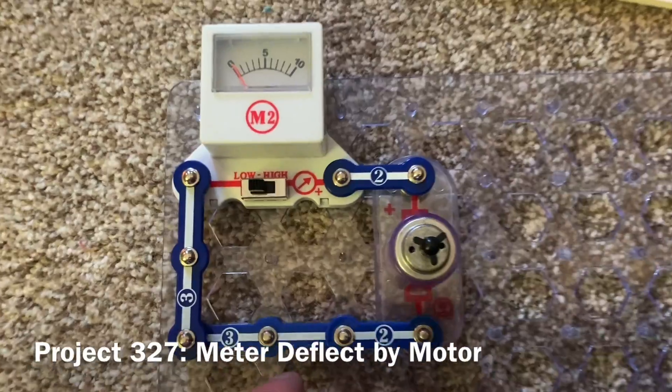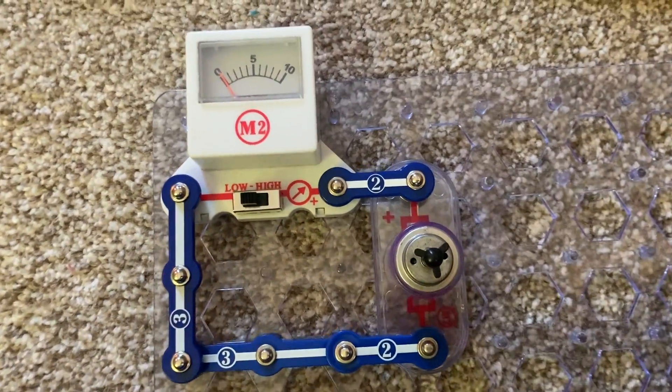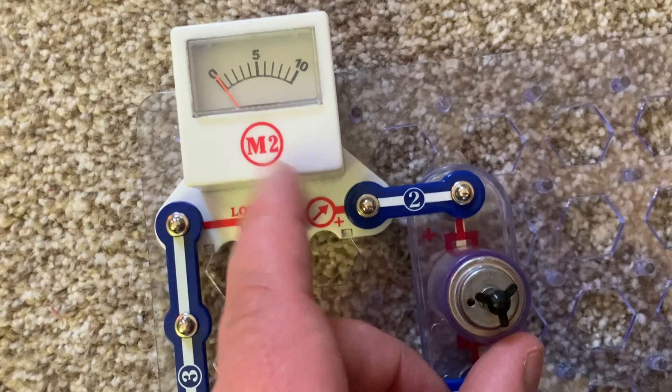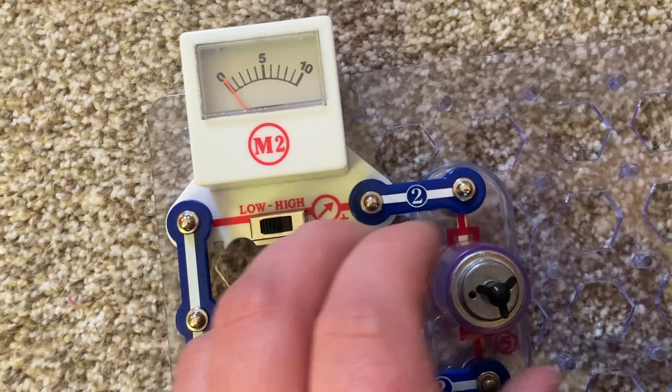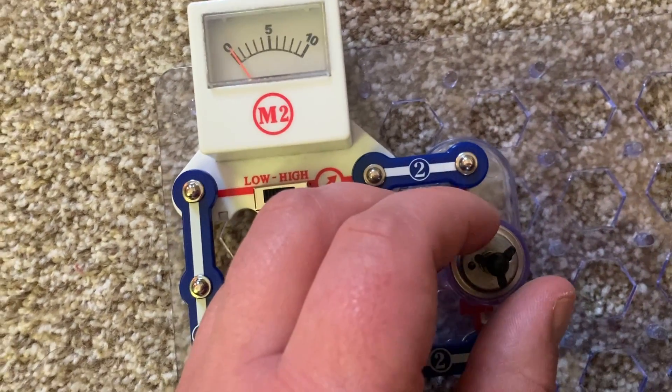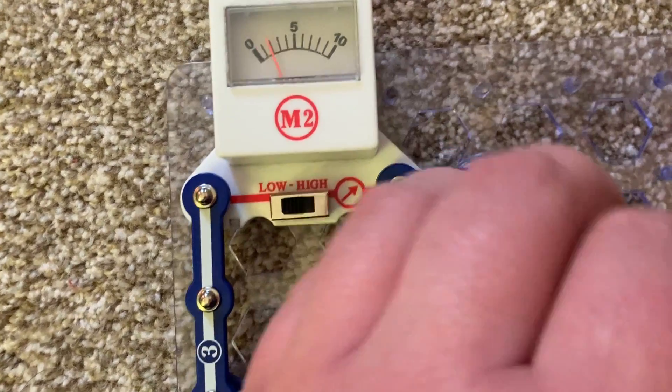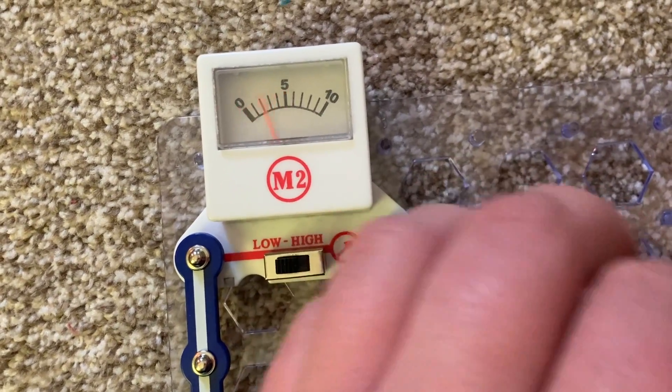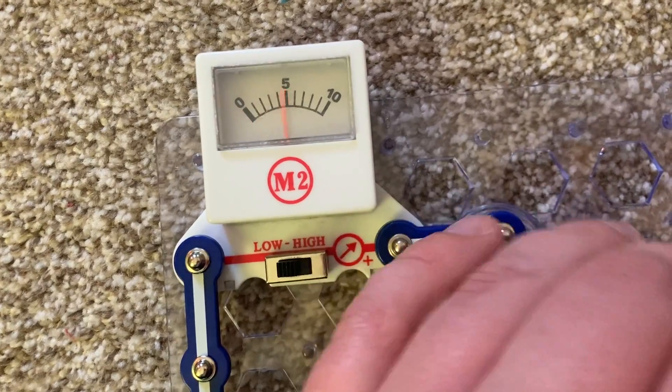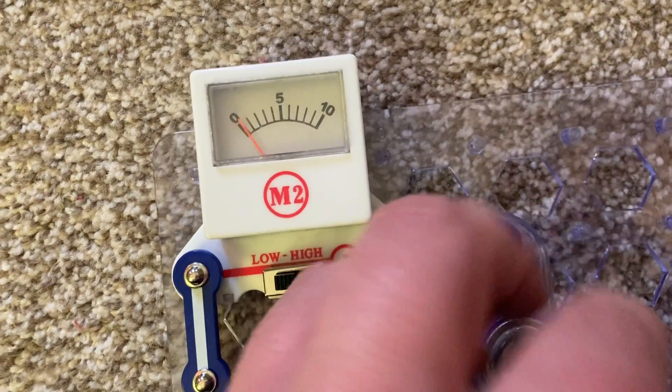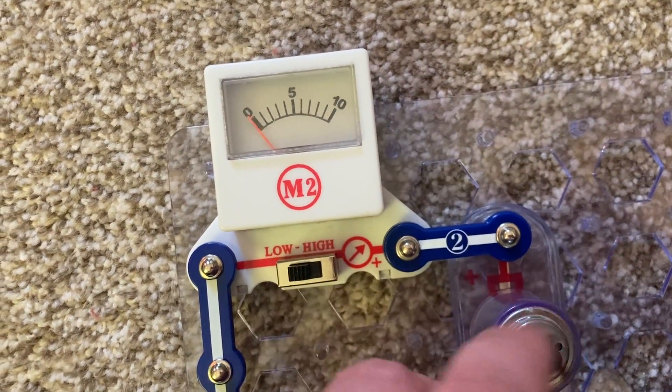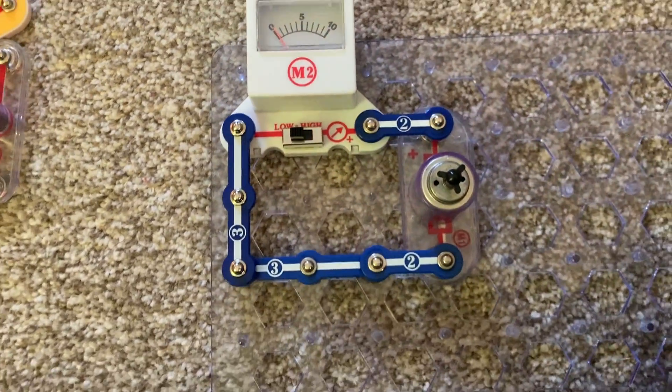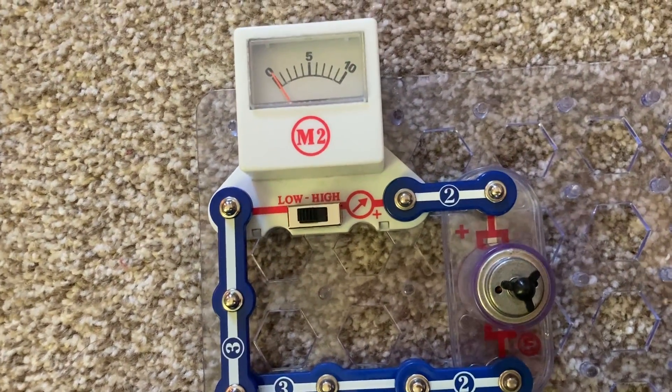You can produce current by spinning the motor. The meter is on the 10 milliamp setting. And when I turn the motor clockwise, the meter will deflect to the right. But when I turn it counterclockwise, it will deflect to the left. Because the direction in which you turn the motor determines the direction the current flows.